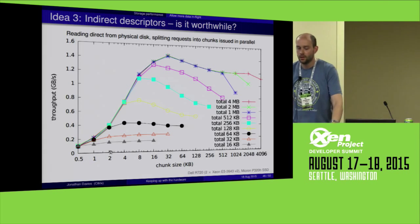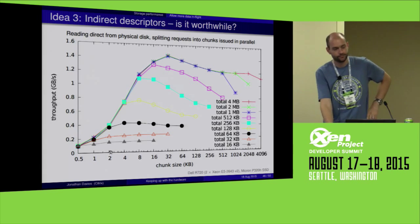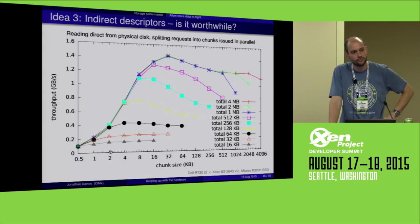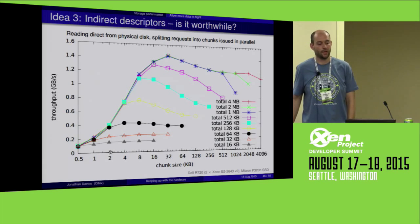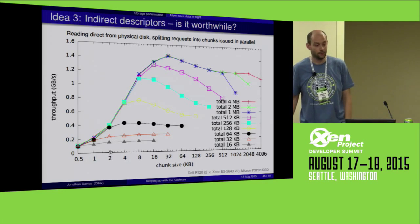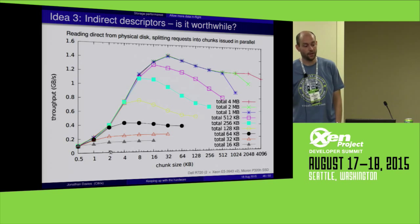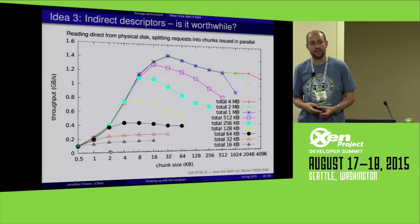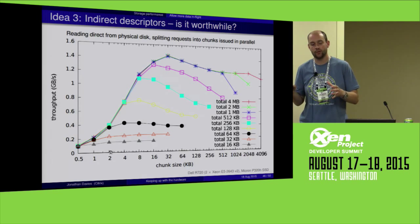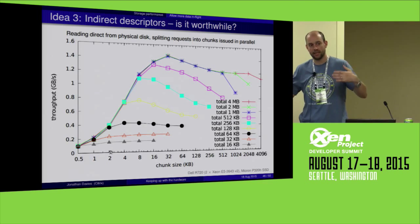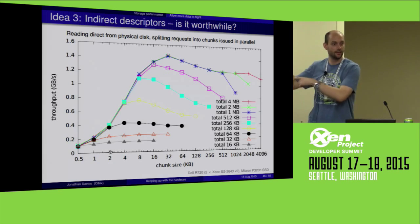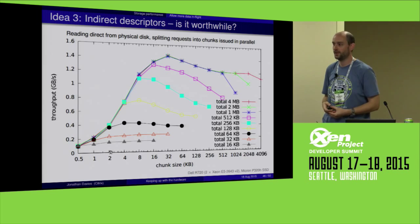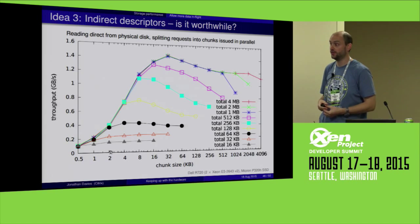I'm imagining there should be some way for a disk driver to register with the block layer and say: my ideal block size or ideal number of parallel requests is X. The kernel already has facilities for merging and splitting requests in the block layer, but it just doesn't know how to do that intelligently. I think a lot of the block layer is still oriented around thinking it's a mechanical disk, so there's probably innovation needed from the people down at LinuxCon to help fix this. We're running out of time, so if there are any other questions please come find me afterwards. Thank you everyone.